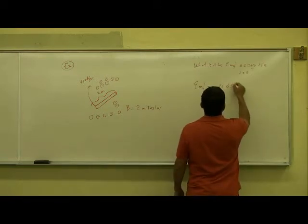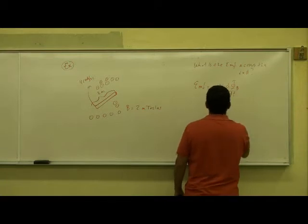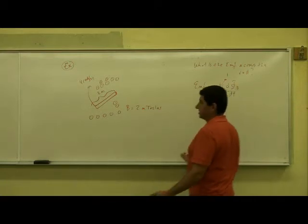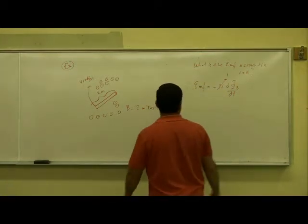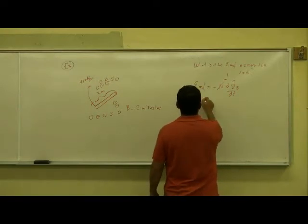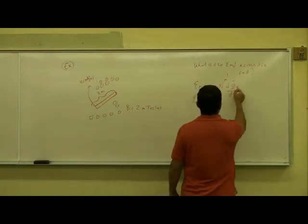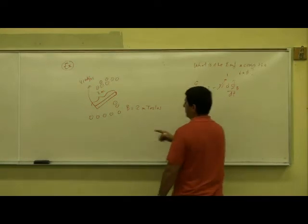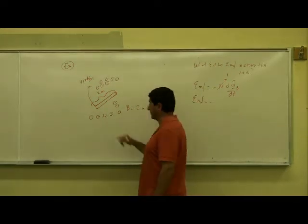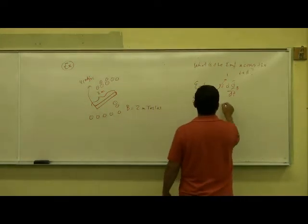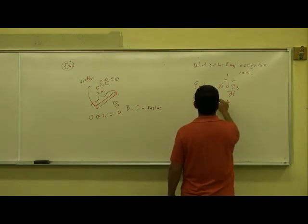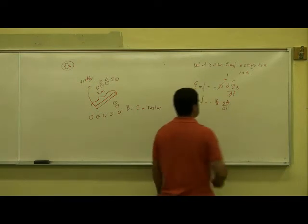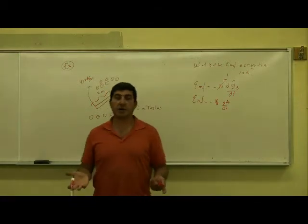The EMF is N dΦ_B/dt. N is one in this case — there's no number of loops. Then you have dΦ_B/dt. The magnetic field is not changing; it's constant. So you have B times dA/dt. The area is changing.